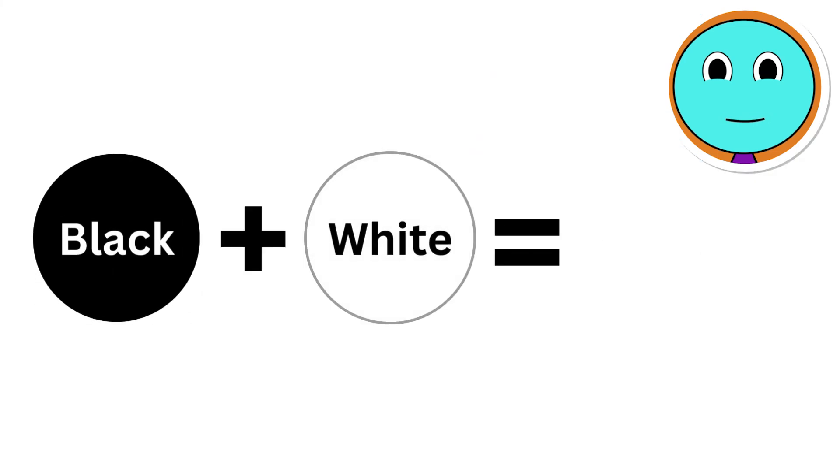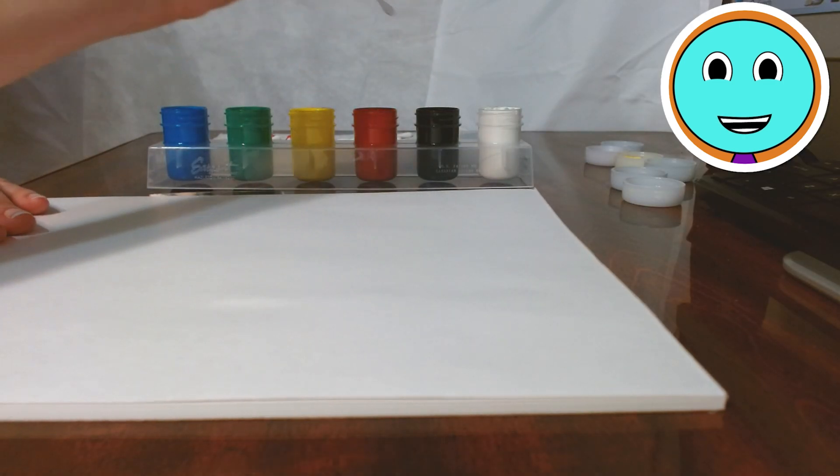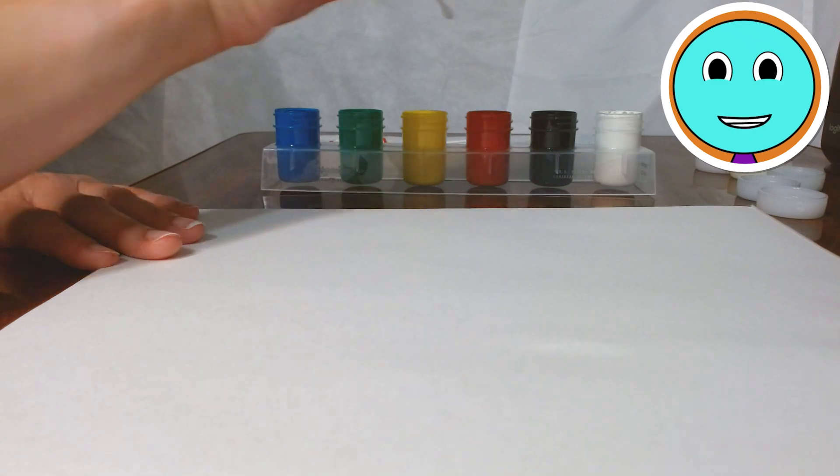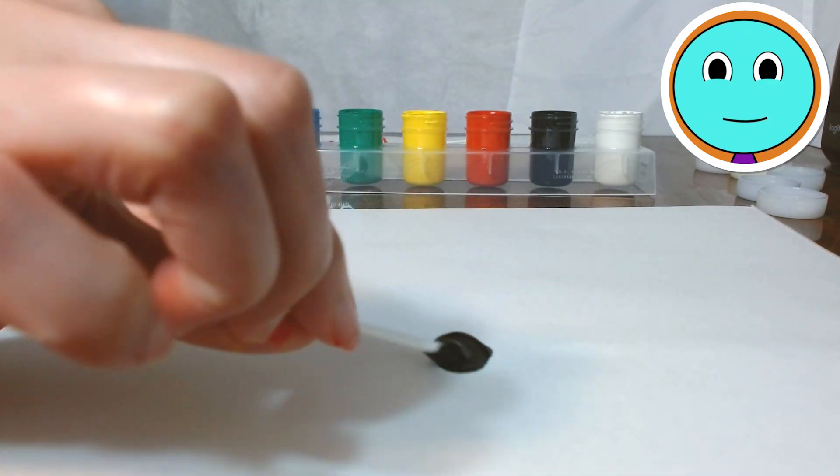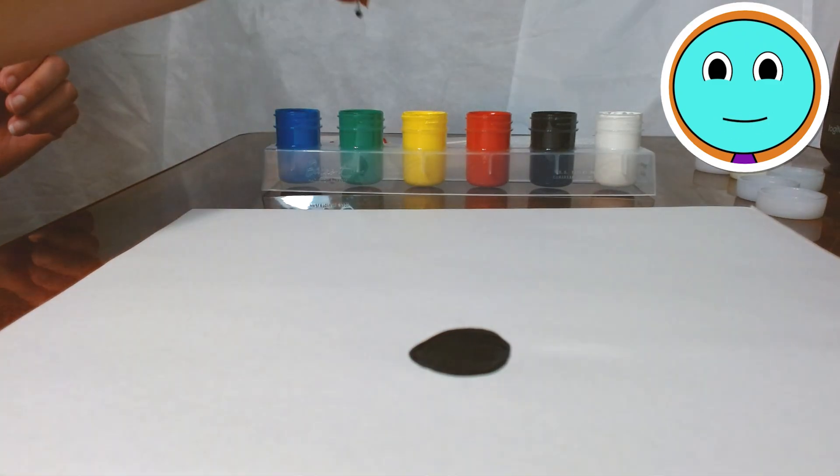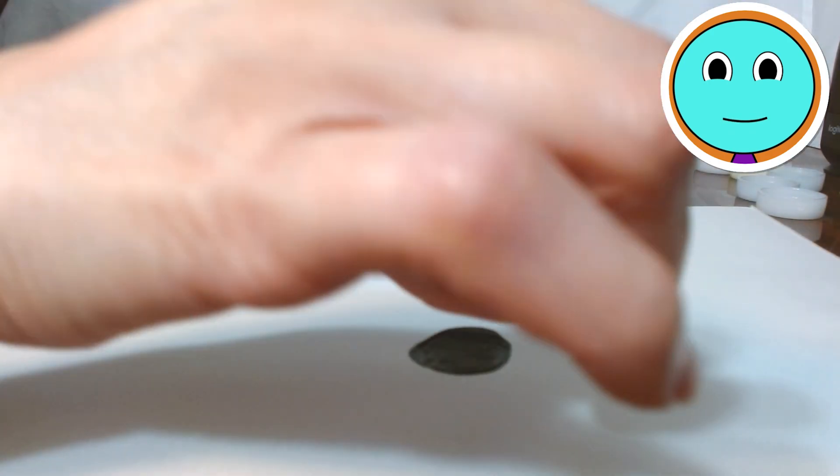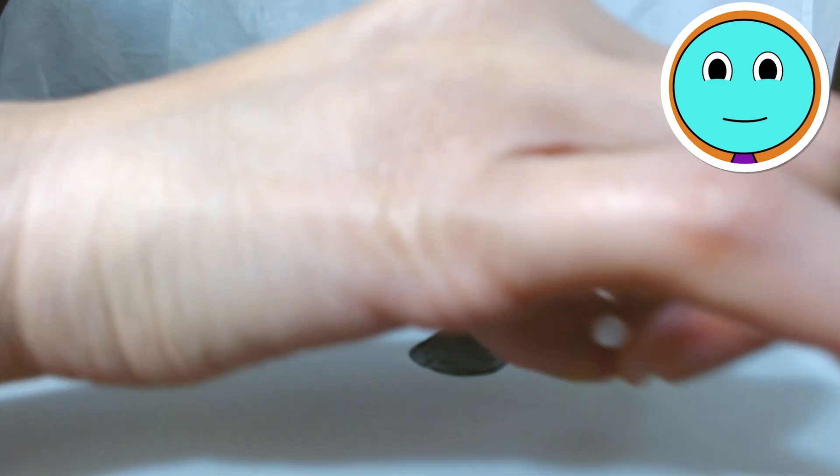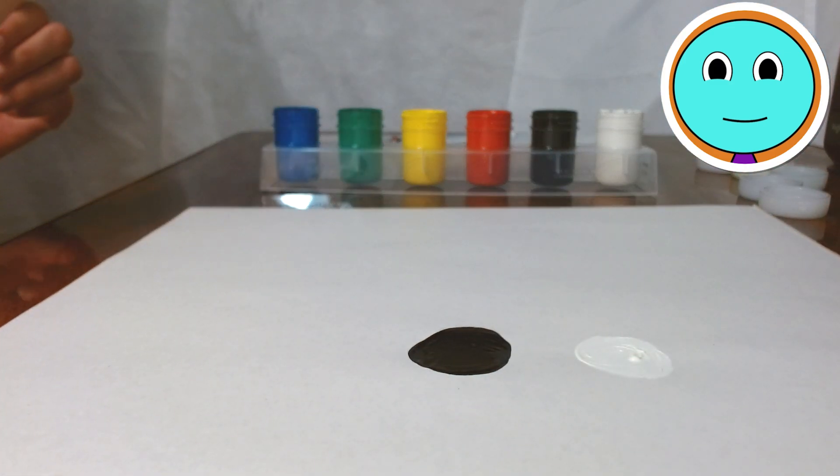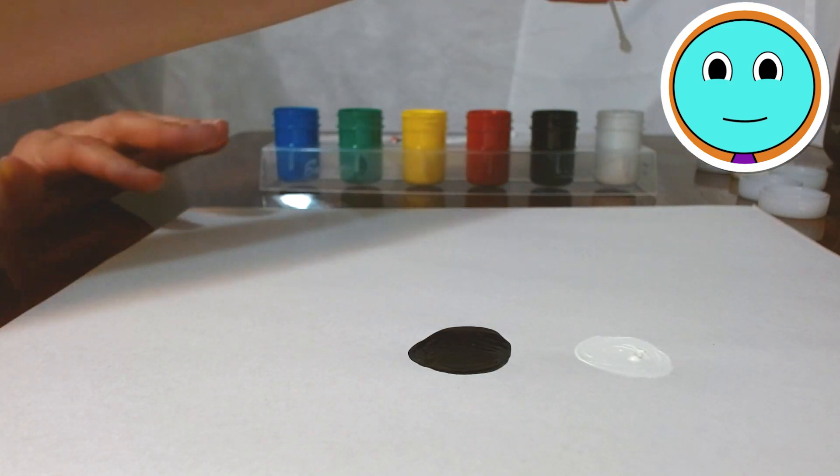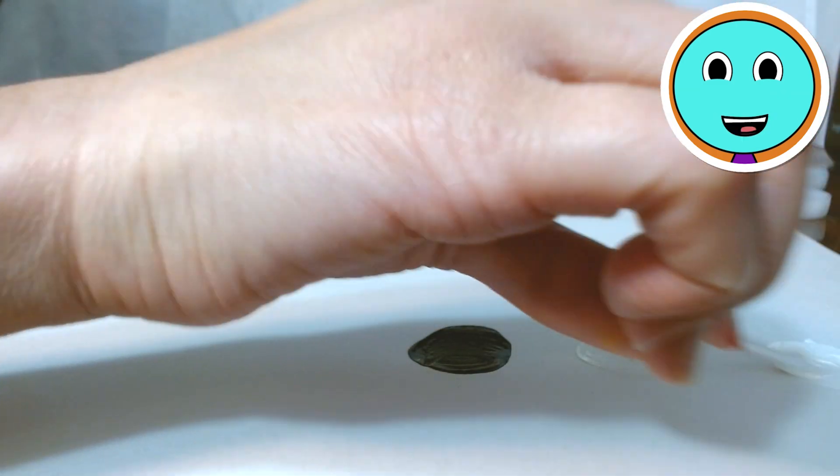Next is black and white. What color do you think that makes when you mix them? Yeah! It's gray! Yay! Here goes. Here's the black paint plus the white paint. Now we're going to mix it.